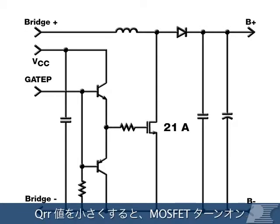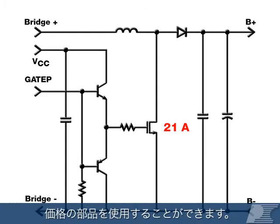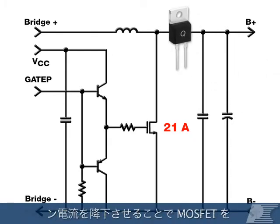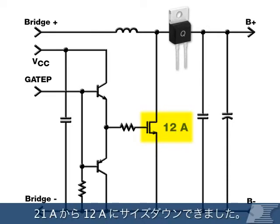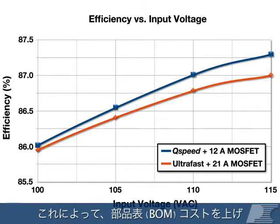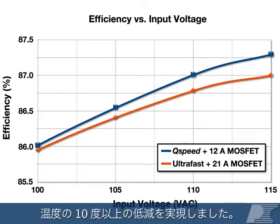A lower QRR reduces MOSFET turn-on current, allowing you to use a smaller, less expensive component. In this design, dropping in a Q-Speed diode allowed for a MOSFET size reduction from 21 amps to 12 amps. This improved efficiency and decreased MOSFET temperature by more than 10 degrees C without increasing BOM cost.